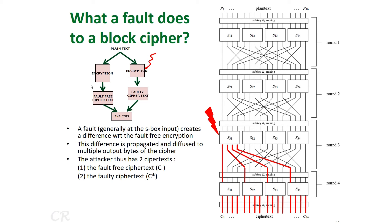Let us look at how a fault attack on a block cipher actually works. We assume that the attacker has a device which is doing an AES encryption, and in order to do this encryption the device has a secret key stored inside. The objective for the attacker is to extract this secret key. The attacker would inject faults as the cipher is doing an encryption or decryption, and it is assumed the attacker can control what plaintext gets encrypted and can view the corresponding ciphertext.